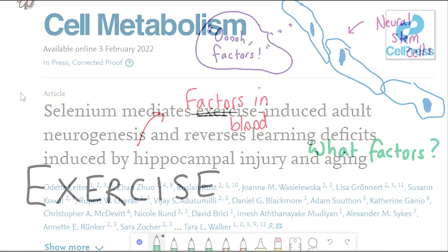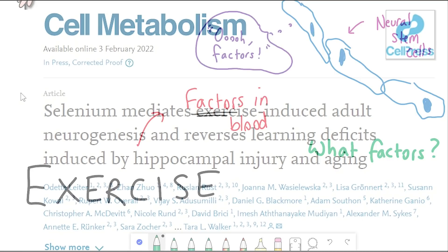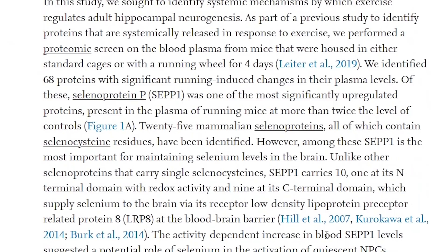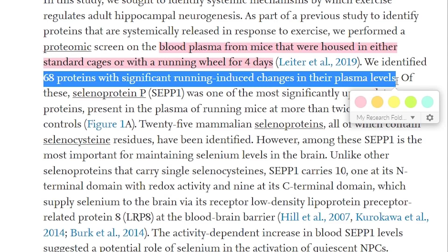So in this recent publication, they did proteomics of mouse blood plasma from either mice that were kept in a cage compared to mice that had access to a running wheel for four days. And out of 68 proteins that changed significantly in the mice with the running wheel, selenoprotein P was the most significantly upregulated.